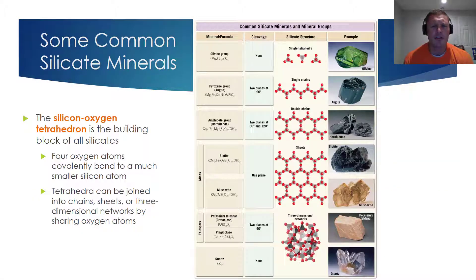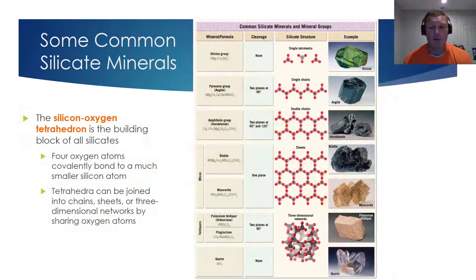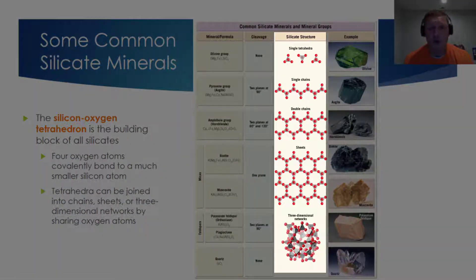I'd like to provide a little greater depth on some examples of silicate minerals — there are some really important concepts on this slide. The silicon-oxygen tetrahedron we saw earlier, that little pyramid-shaped building block, is the functional unit for all of the minerals and groups shown on this slide. Focus especially on the silicate structure column in this image. For all the different groups of silicate minerals, the unifying theme is that the silicon-oxygen tetrahedron is the building block for all of them.